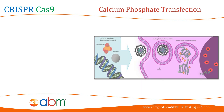The principle of calcium phosphate transfection involves mixing the DNA with calcium phosphate to condense the DNA and form a calcium phosphate-DNA co-precipitate. The calcium phosphate also helps in binding to the cell surface, and from there, the DNA enters the cell by endocytosis.